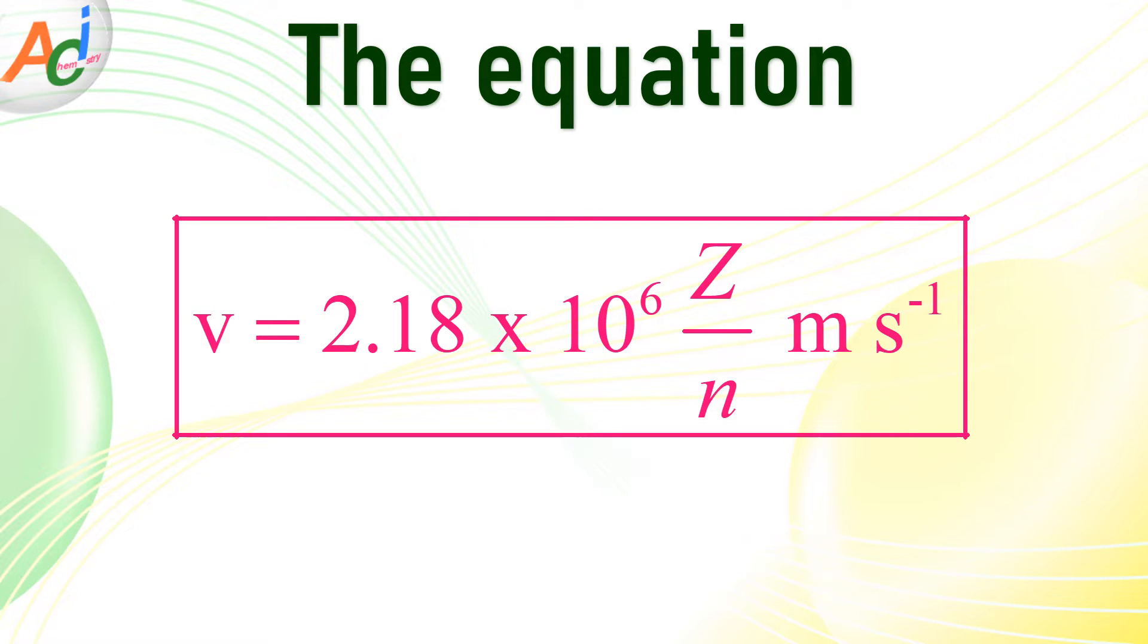Here, the Z represents the atomic number while n corresponds to the principal quantum number of Bohr's orbit. It is important to note that the velocity of the electron is expressed in SI units, i.e. meters per second.